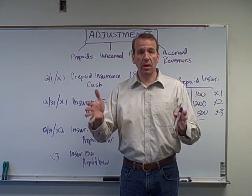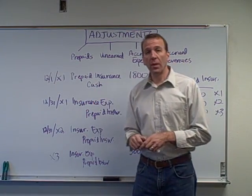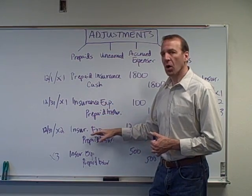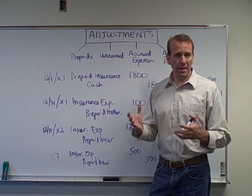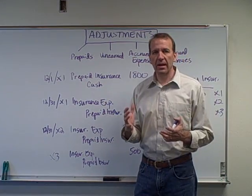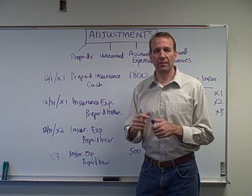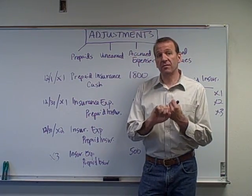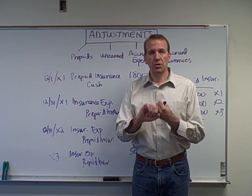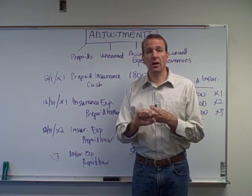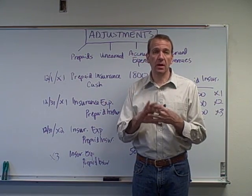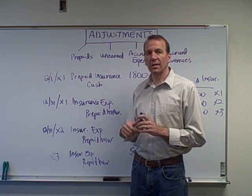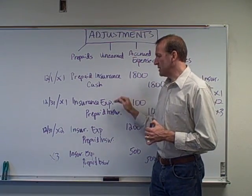Maybe the new policy is a one-year policy, maybe a two-year policy — whatever it is, we need to recognize it as Prepaid Insurance and then expense it over the life of the policy. It makes sense; just think about it carefully. Other things we prepay include supplies, insurance, and sometimes rent expense — we might owe six months or a year's worth of rent up front. All of these work in a similar manner, just as we did with the insurance example.